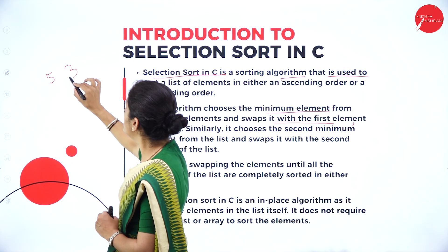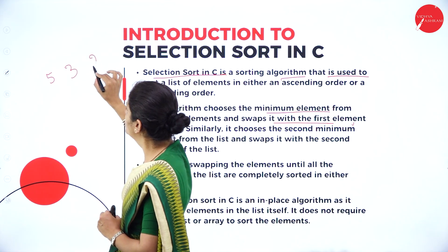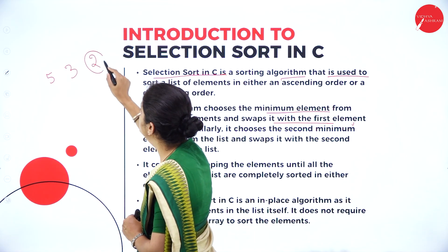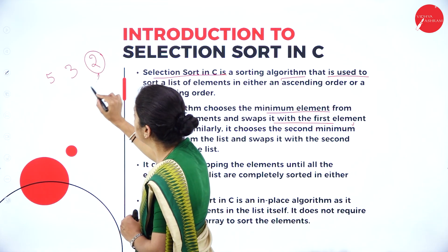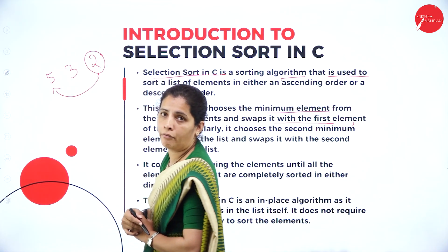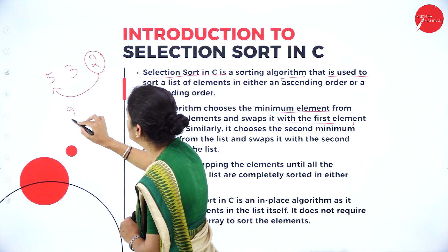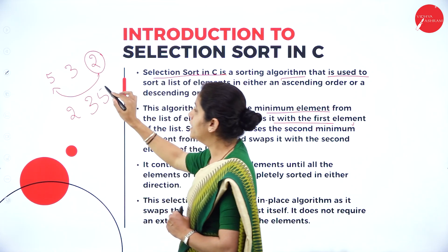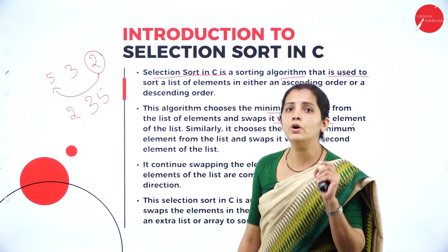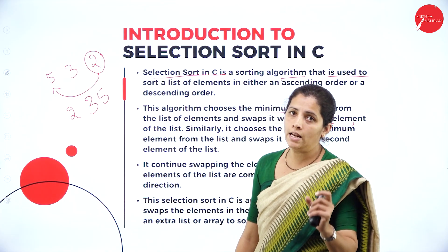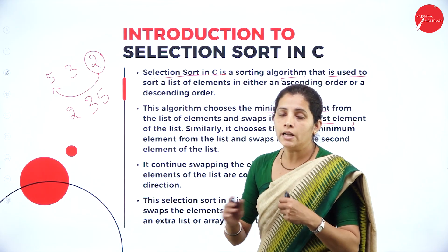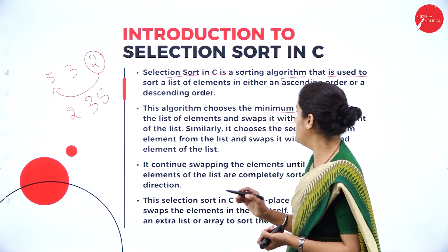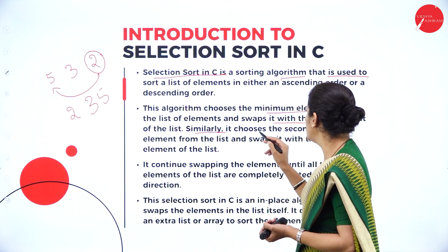For example, I have elements 5, 3, and 2. The smallest element is 2. I will swap 2 with 5, so I get 2, 3, 5. In selection sort, I select the smallest element and swap it with the first element. Similarly, it then chooses the second minimum element from the list and swaps it with the second element.